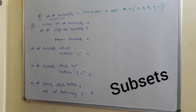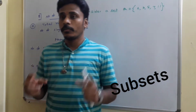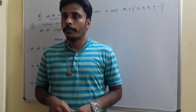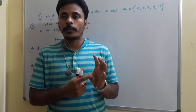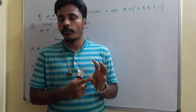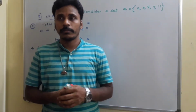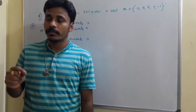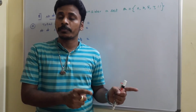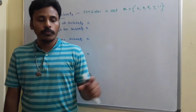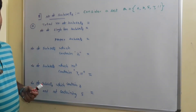In the last class we discussed the concept of subsets. We counted the total number of subsets as 2 power n for a given set. The number of empty subsets is only one for any given set, the number of improper subsets is also only one, whereas the number of proper subsets is 2 power n minus 1.